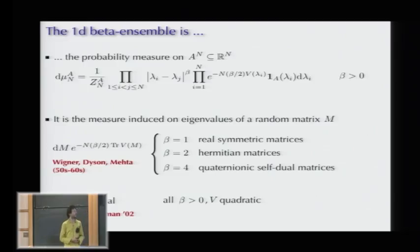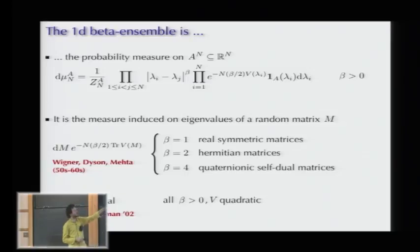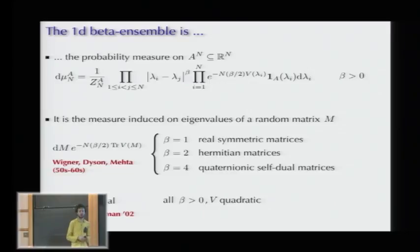The beta ensemble consists of n particles on the real line, with positions denoted lambda_i. There is Coulomb repulsion between them, and they are trapped in some potential V. Here beta is a positive parameter—it plays the role of inverse temperature in the model. A is some subset of the real line, and very soon we will take A compact for a reason I will explain.